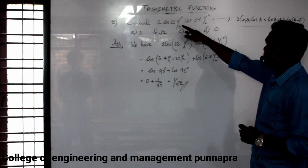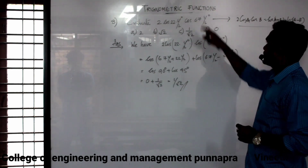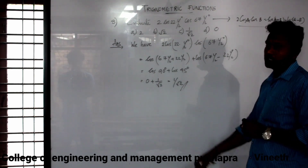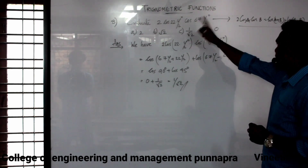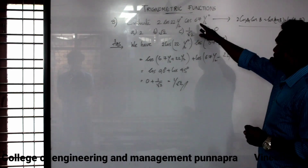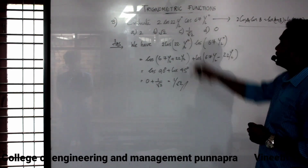With A equal to 67.5 and B equal to 22.5, so A plus B equals 90 degrees and A minus B equals 45 degrees.